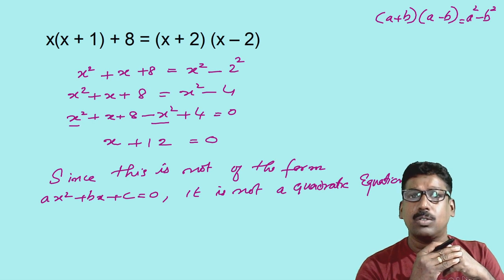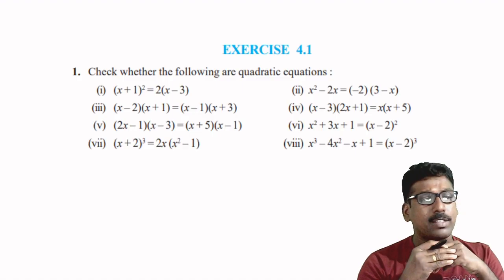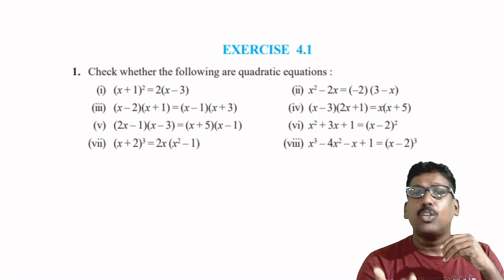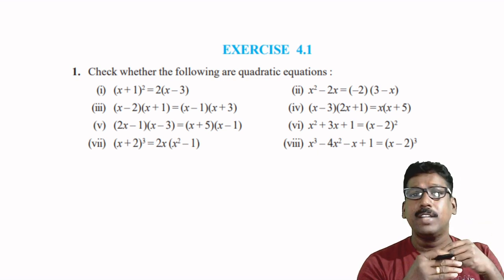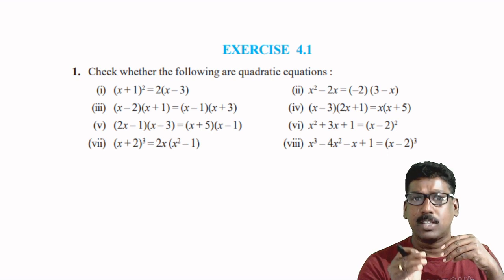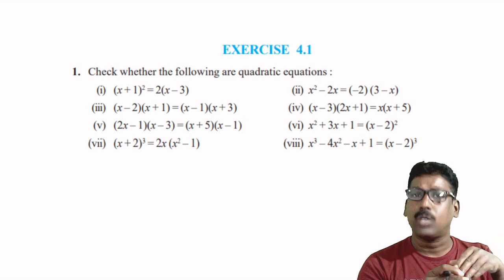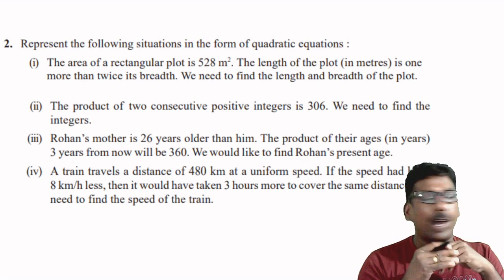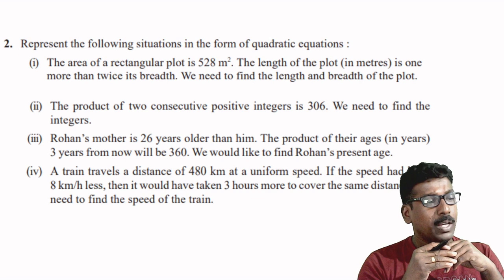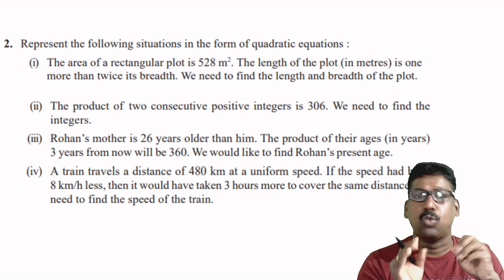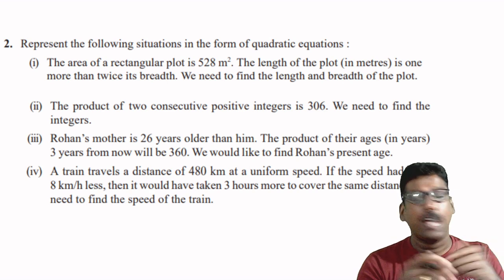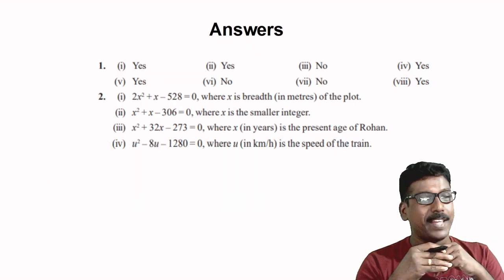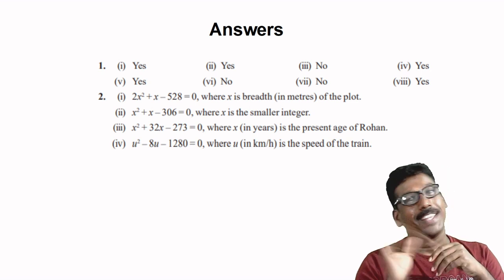Now let us do some textbook exercises. Here is Exercise 4.1: check whether the following are quadratic equations or not. What you have to do is simplify it — if it is of the form ax squared plus bx plus c equals 0, then it is a quadratic equation; if not, it is not a quadratic equation. There are also word problems where you have to represent situations in the form of a quadratic equation. You read the question and do accordingly. Here are your answers — do verify yourself. That is all for today's class.